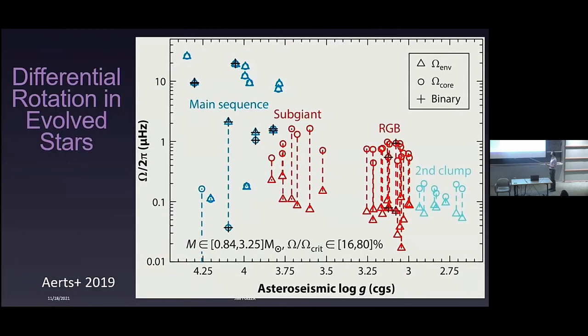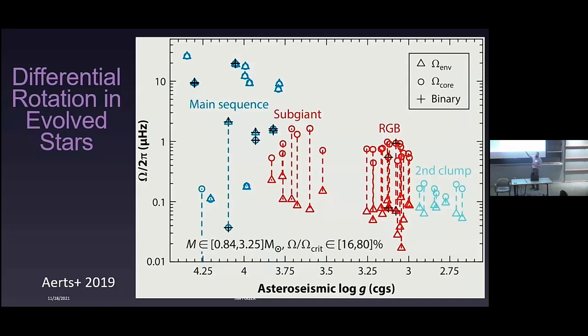Conterss has a nice review paper putting a lot of this together. For main sequence stars, especially rapid rotators, they rotate almost rigidly. For evolved stars like subgiants and red giants, the core might rotate about 10 times faster than the surface. For clump stars, it's more like twice as fast. And then there are some very slow rotators on the main sequence that rotate very differentially, which are kind of anomalous.